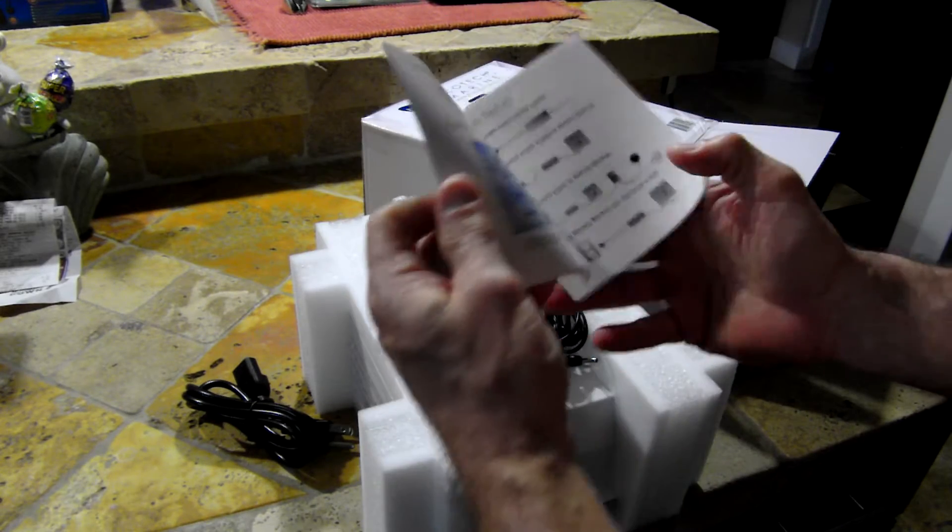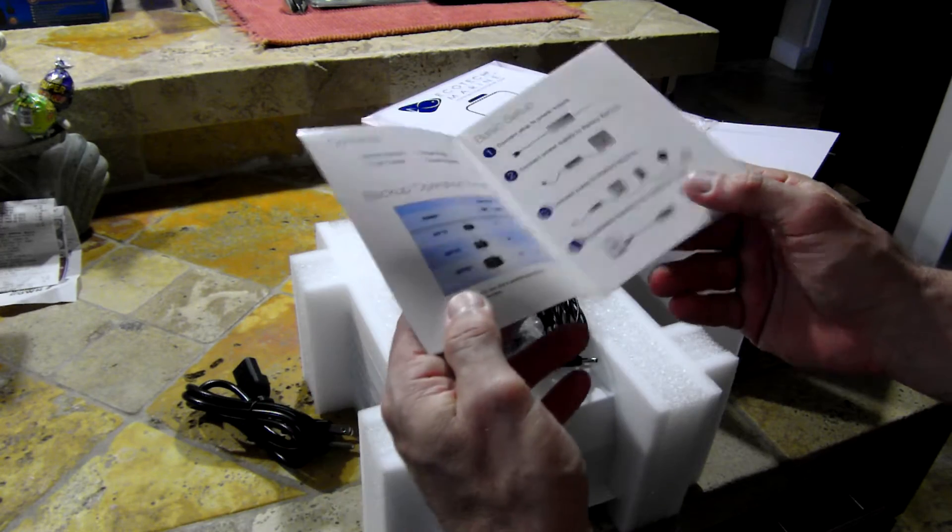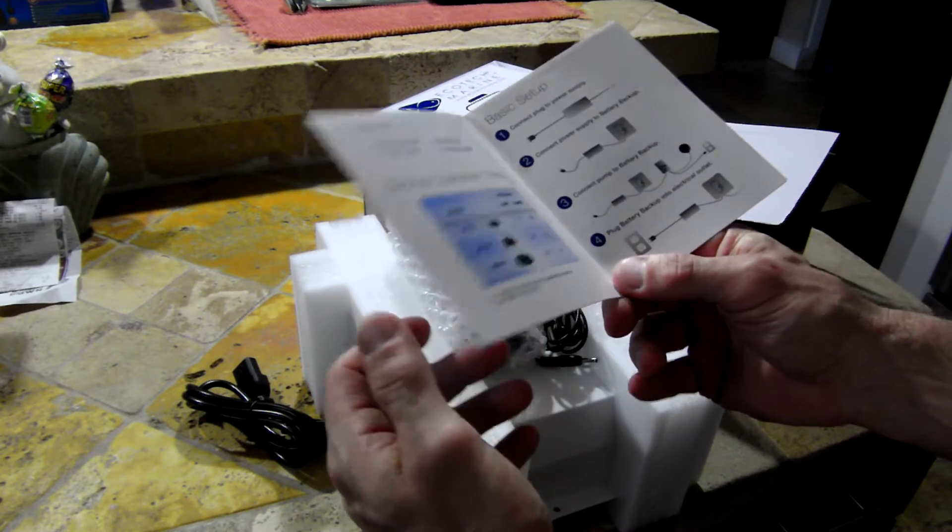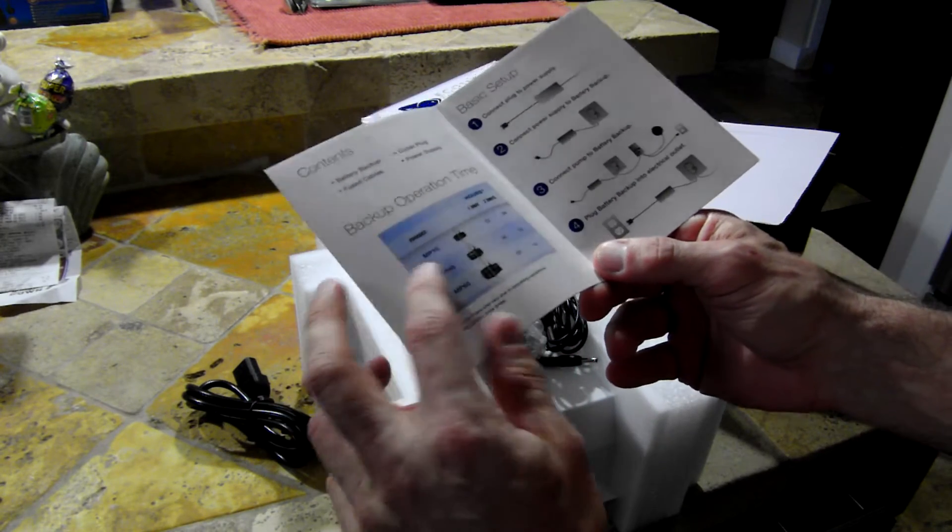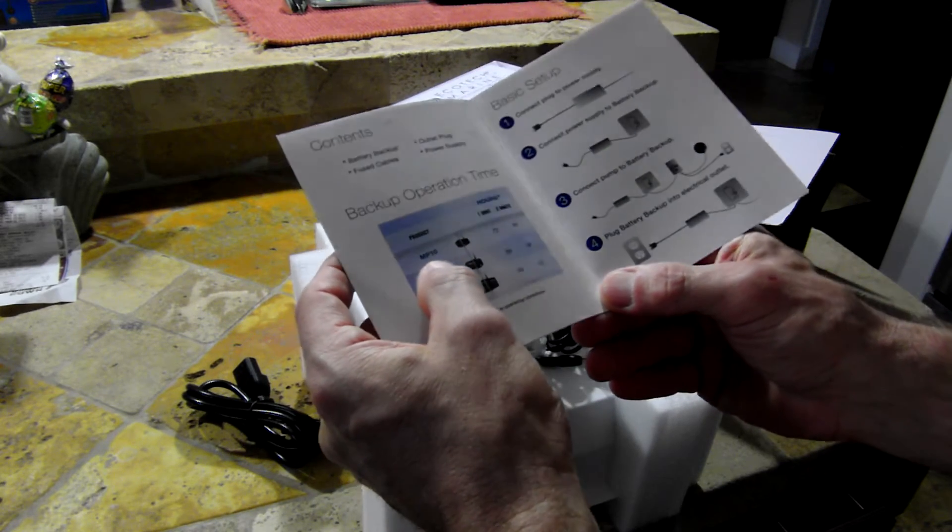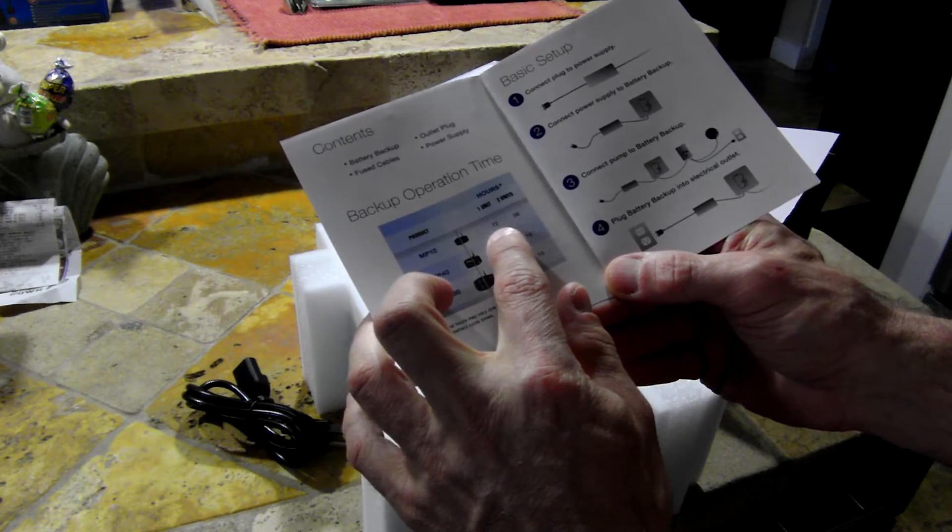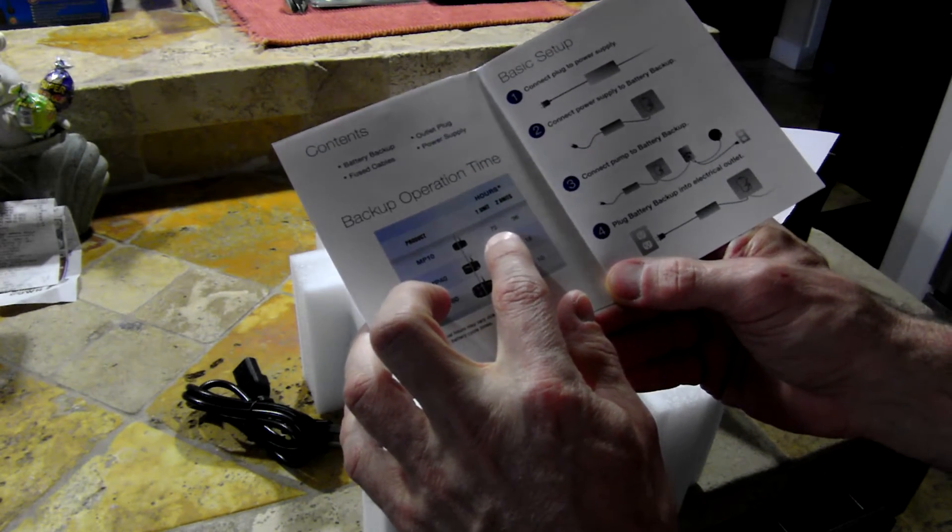Our instruction manual. Here in South Florida we have occasional power blackouts. We have hurricanes down here. According to the instructions, this battery backup unit will enable me to run one MP10 pump for a total of three days, 72 hours, which is pretty impressive.